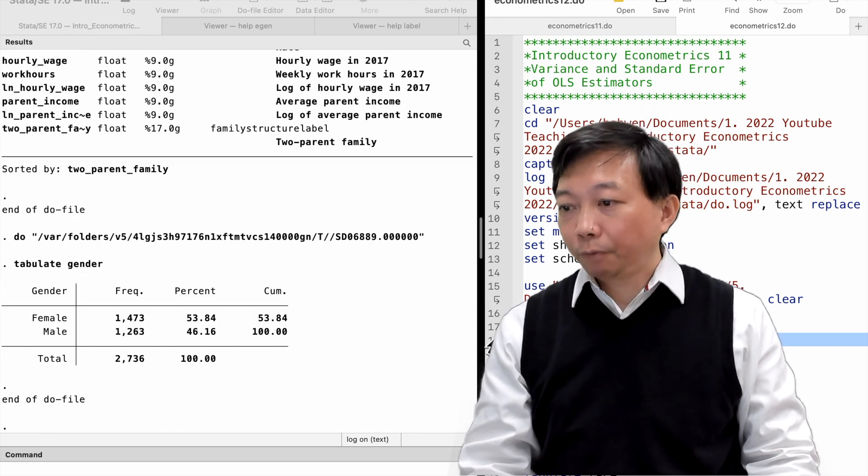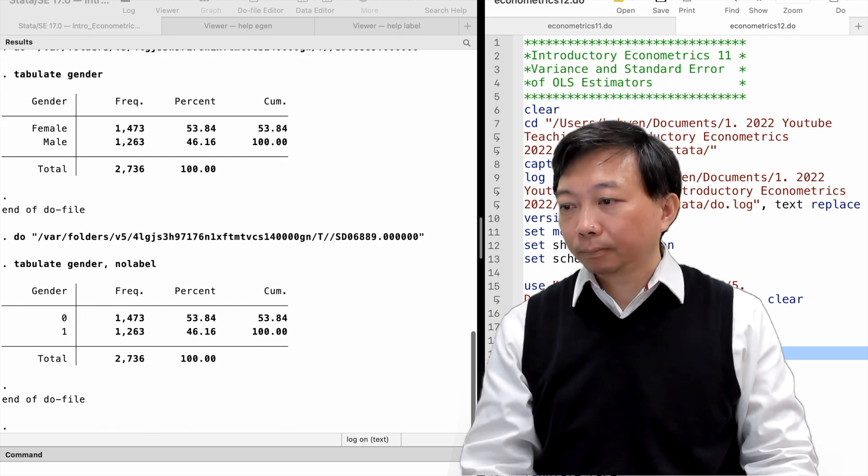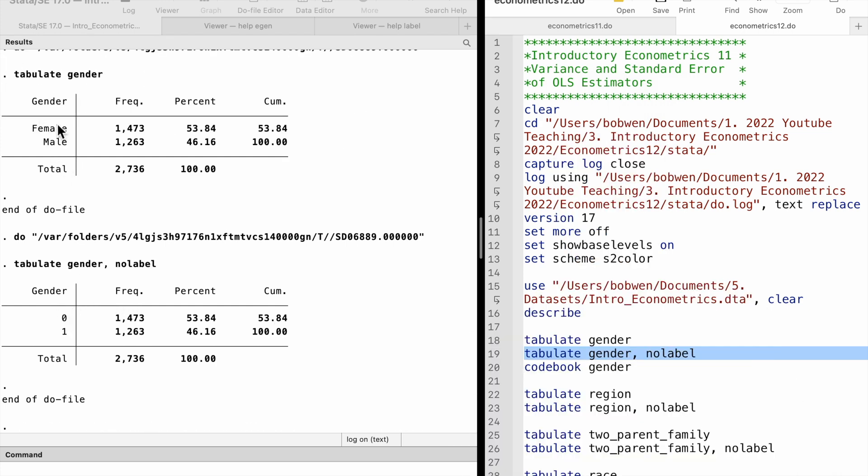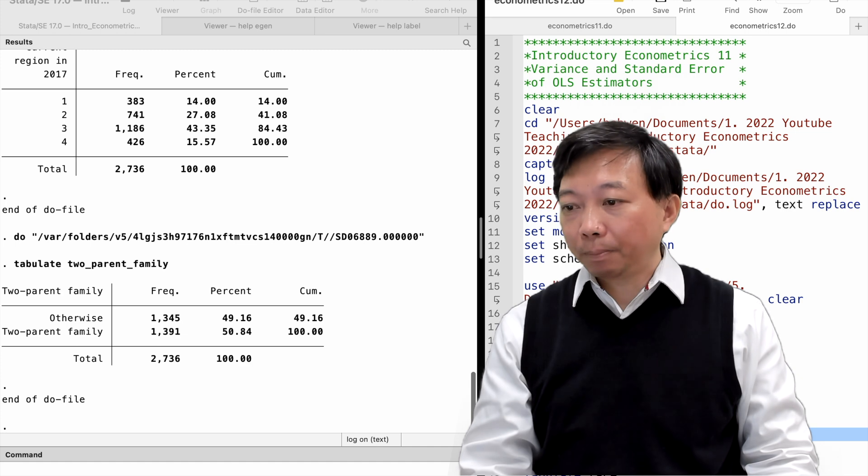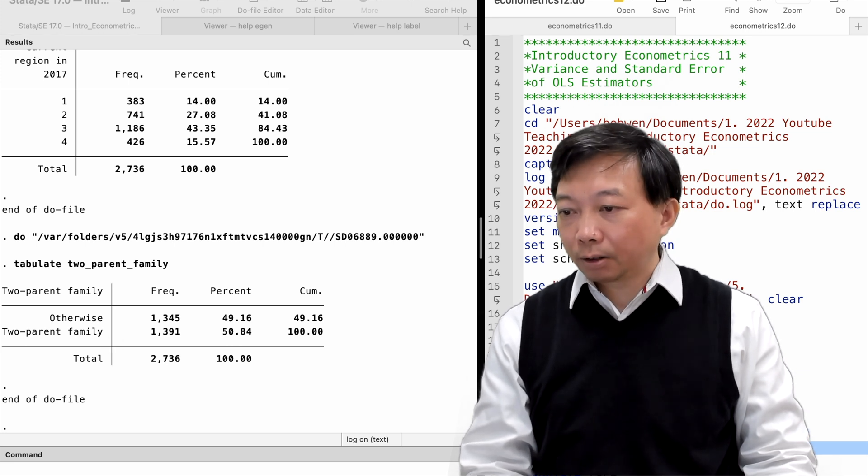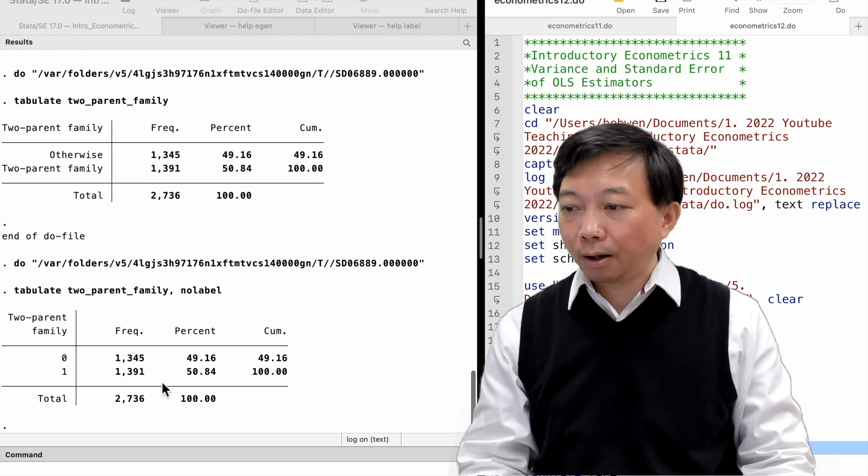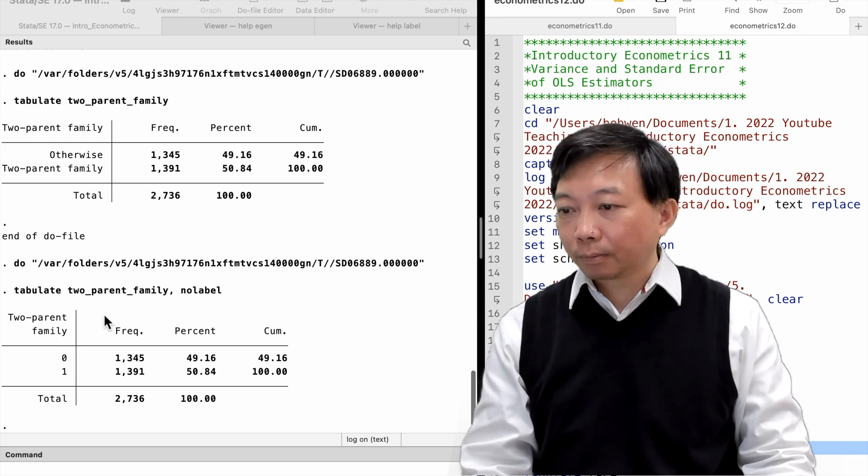In this survey dataset, we find binary variables, like gender. Another binary variable is two-parent family. It is equal to one if the worker grew up in a two-parent family during her 16 years of childhood. It is zero otherwise.